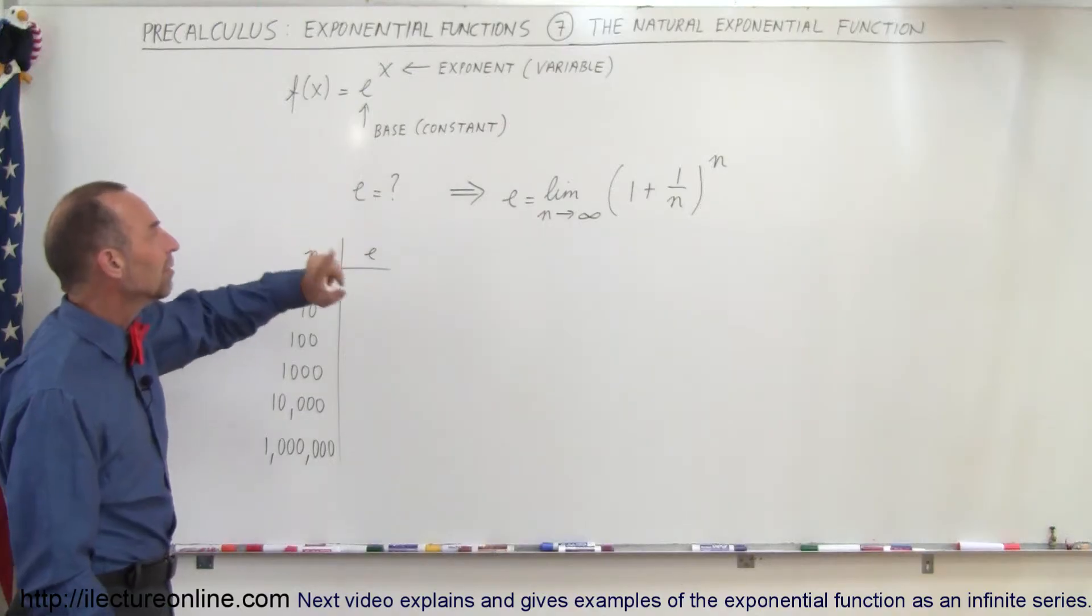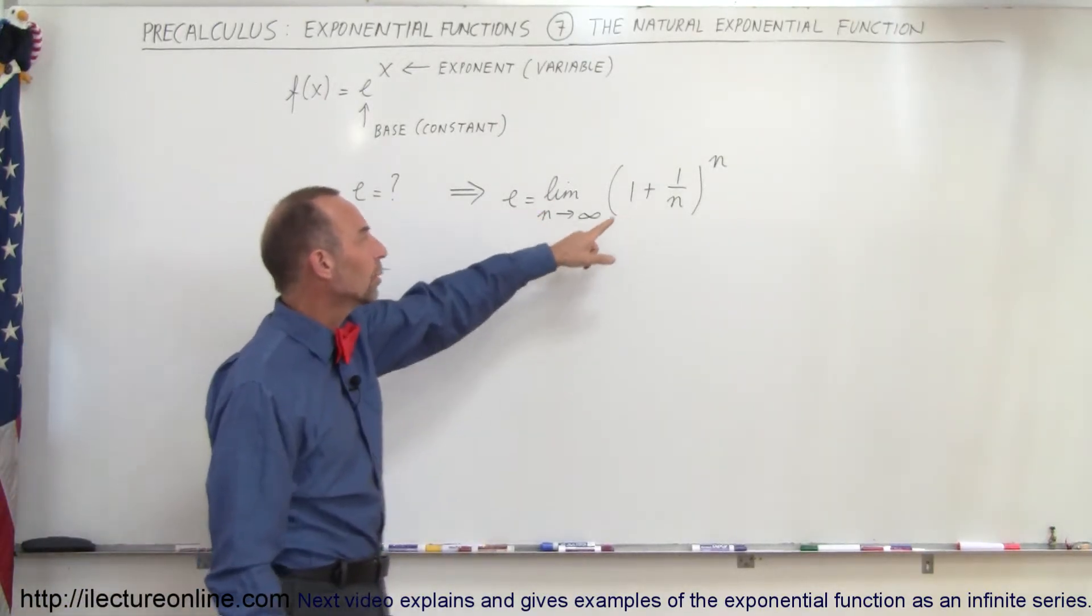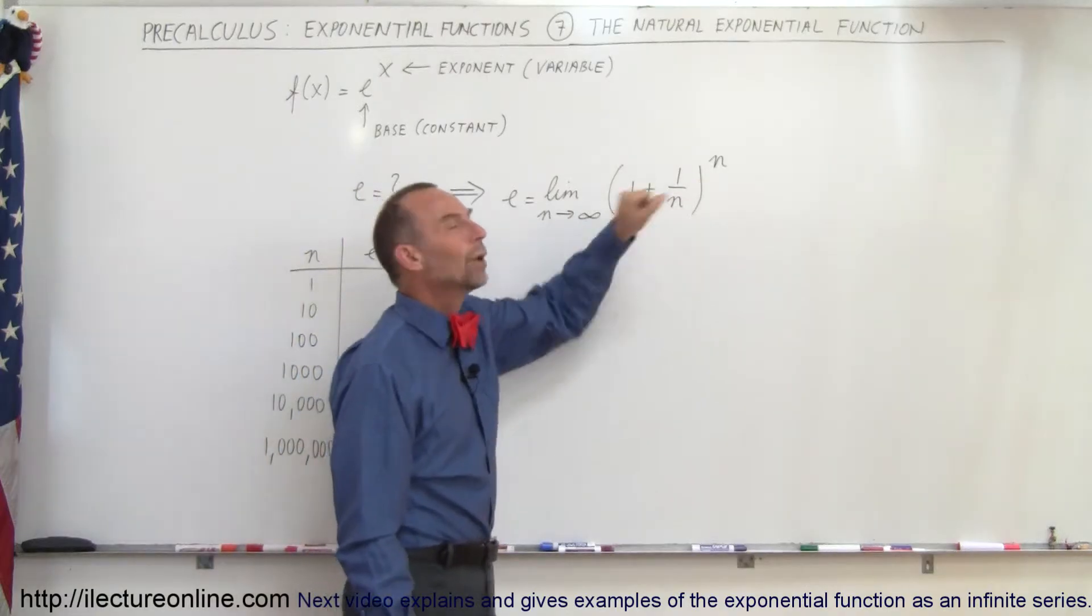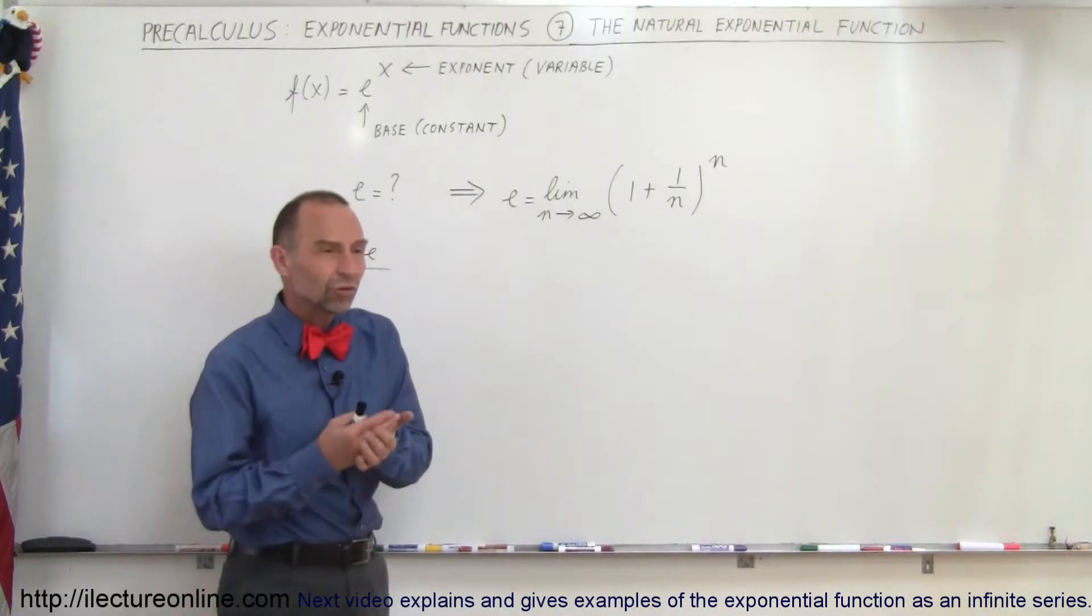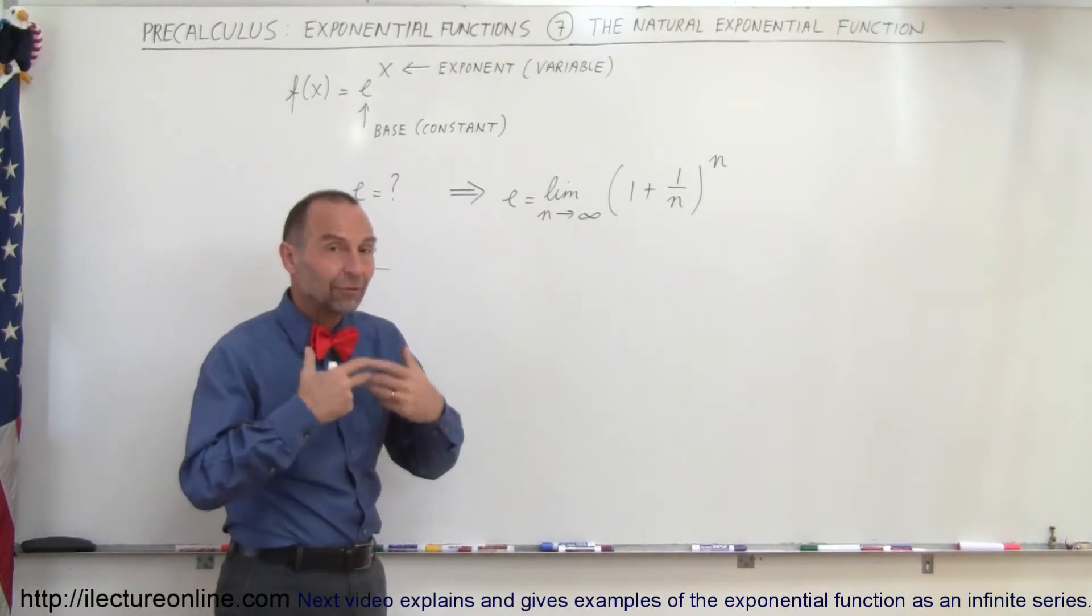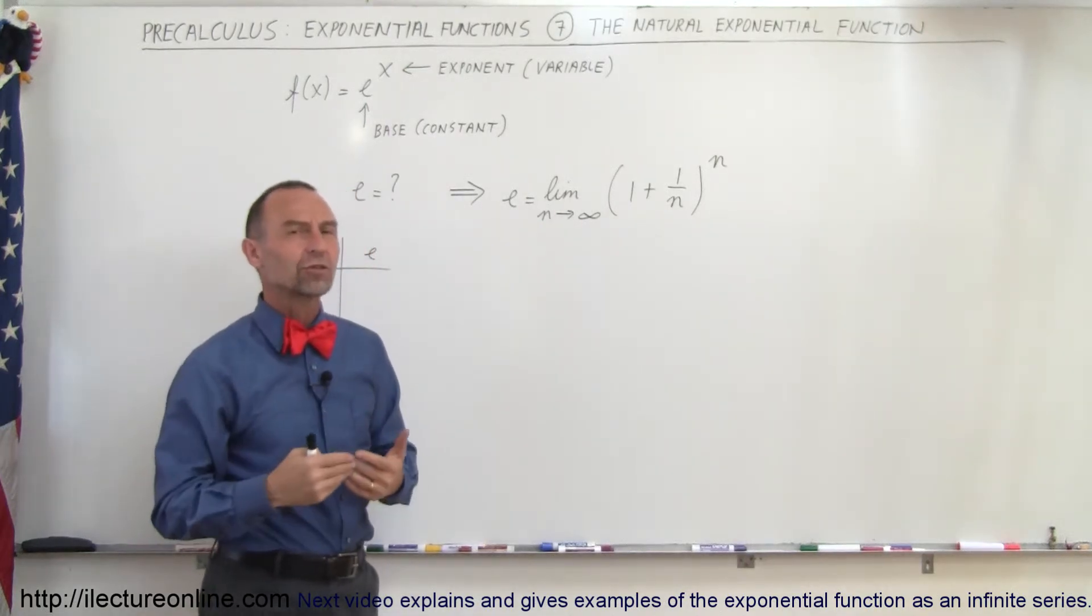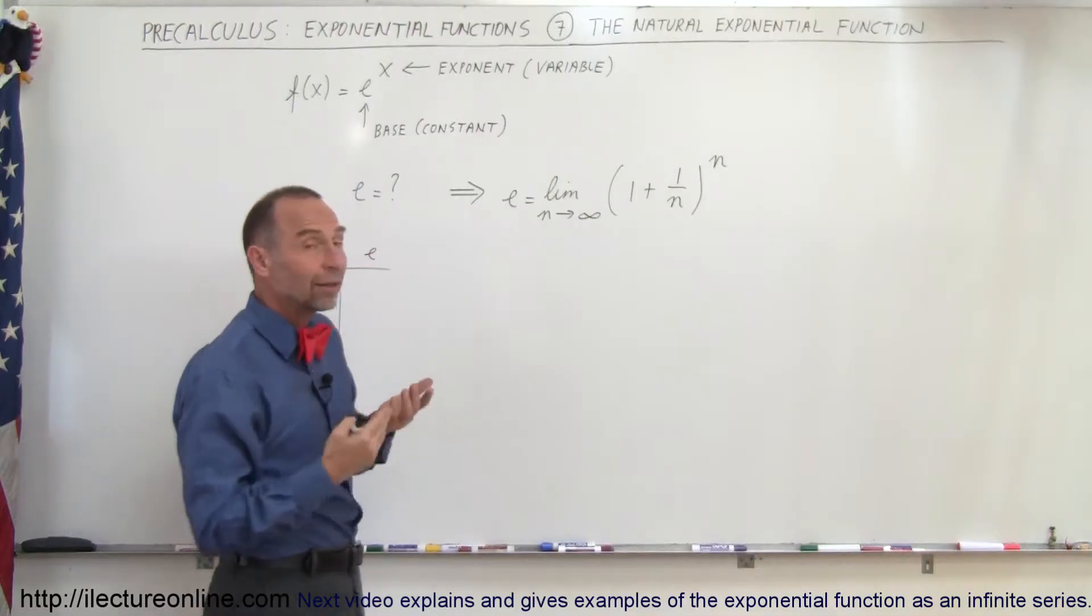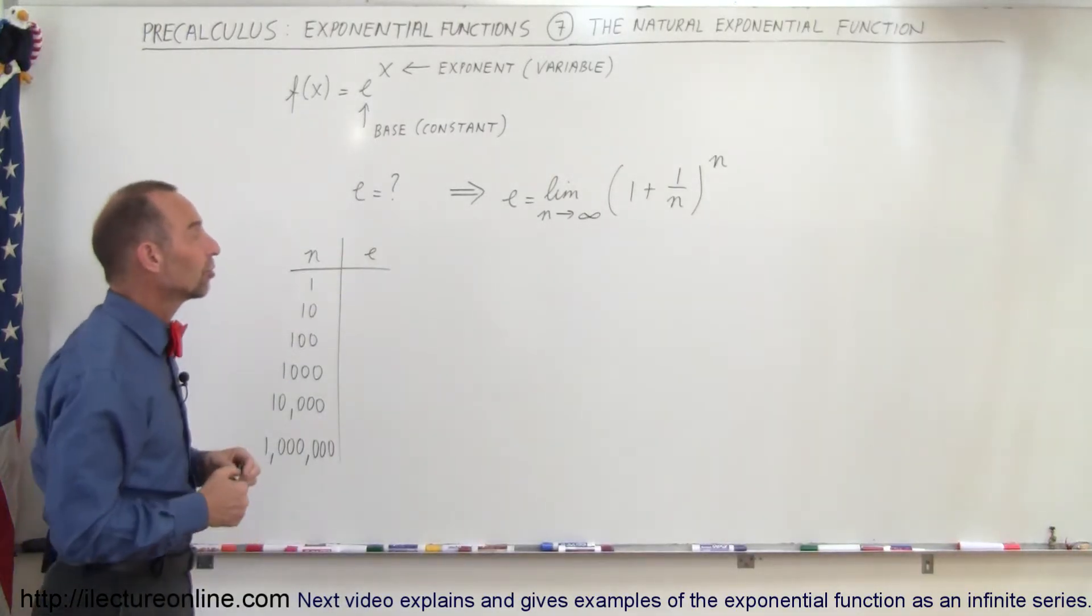So e mathematically can be defined as the limit as n approaches infinity of the quantity 1 plus 1 over n raised to the n power. So what would that number be? Well, it turns out there's no exact value for that number. We can get very close to the number by working this expression out for very large values of n. So let's go ahead and see how that works when we plug in values for n in this particular situation.